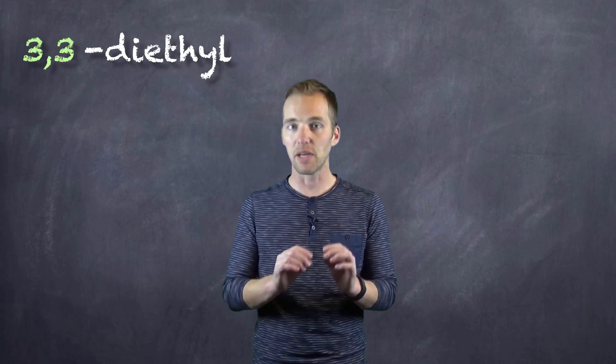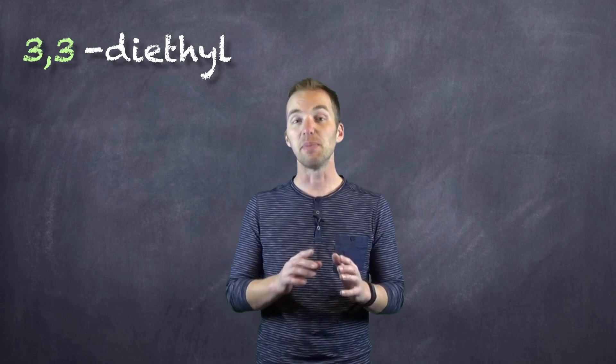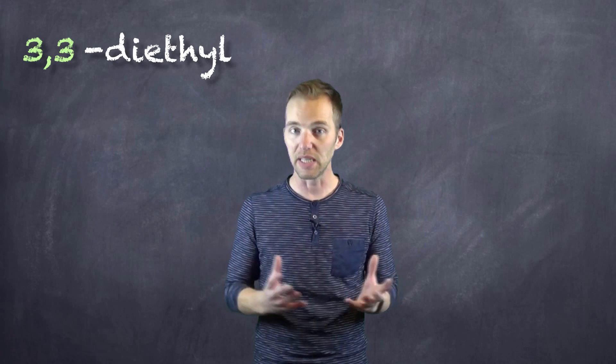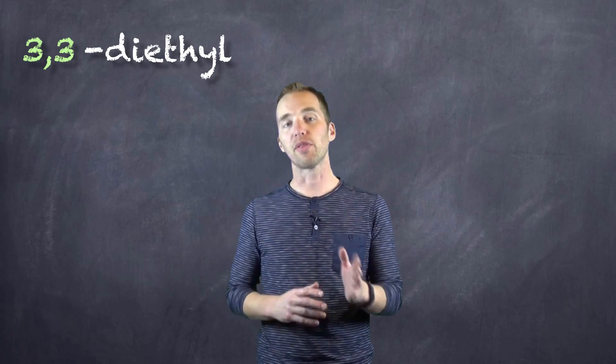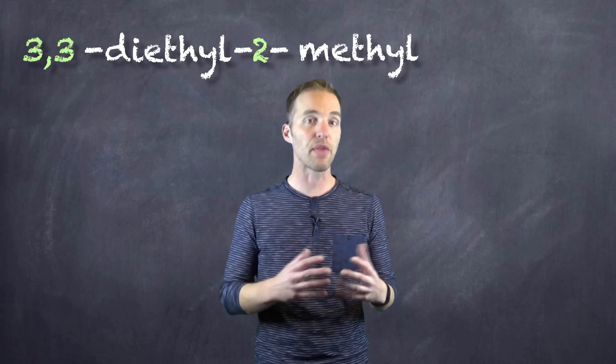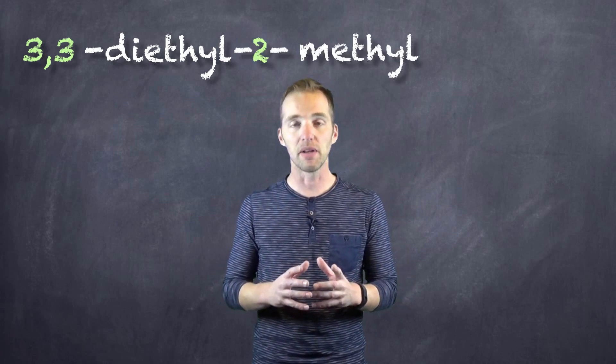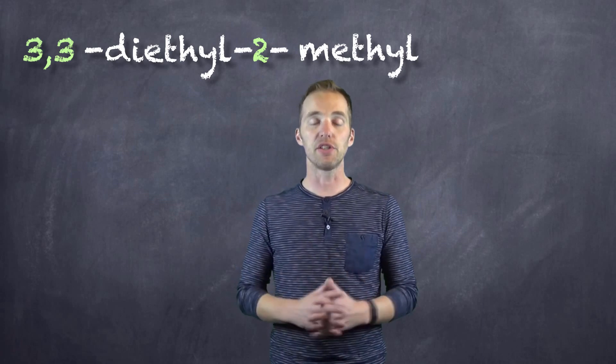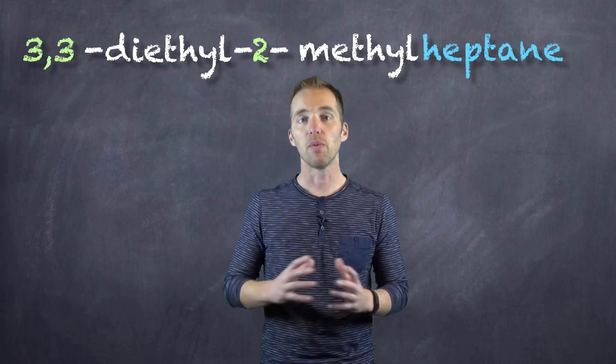The diethyl is not because they both branch off the same carbon, it's because we have two ethyl groups in the entire molecule. So we have a three comma three diethyl. We then have our two methyl, because our methyl group branches off of the second carbon, and of course because our longest continuous chain is seven carbons, we have a heptane.